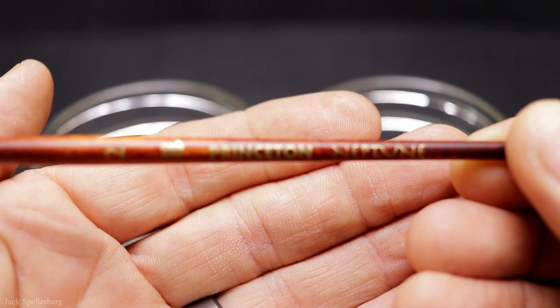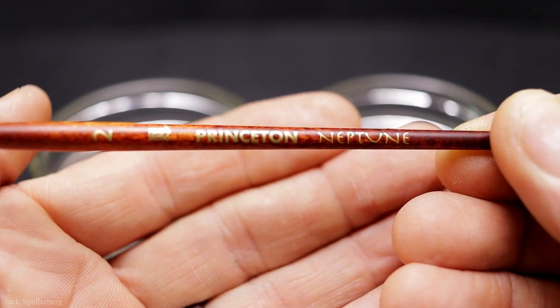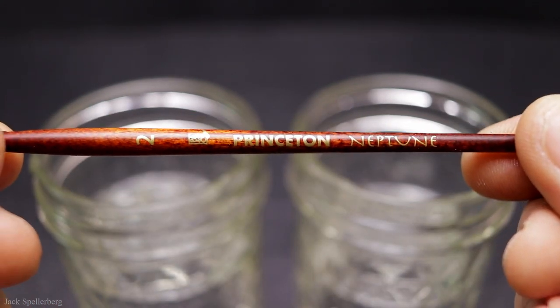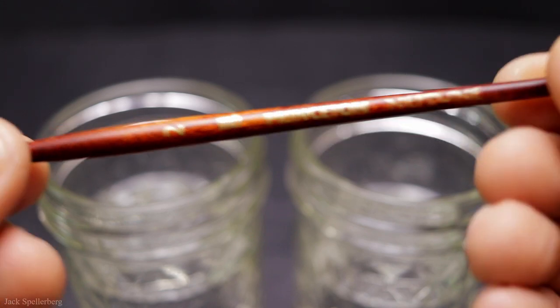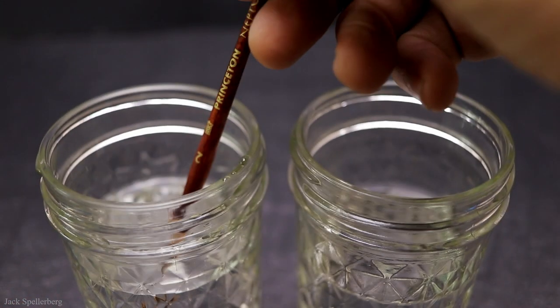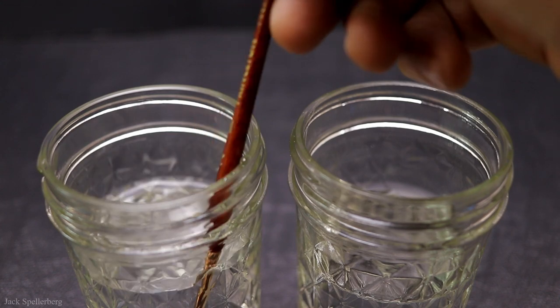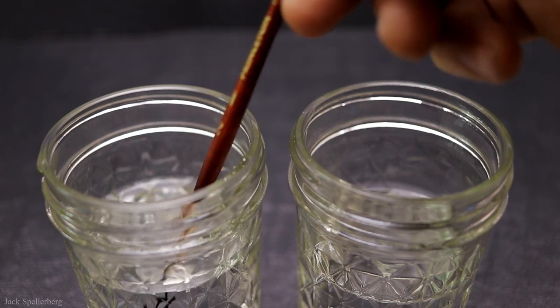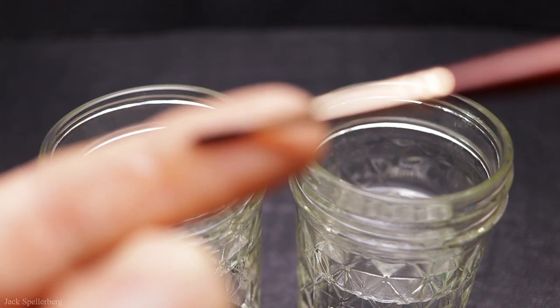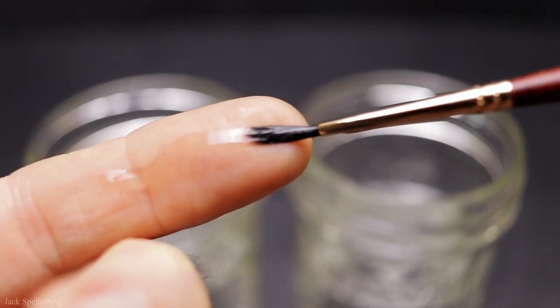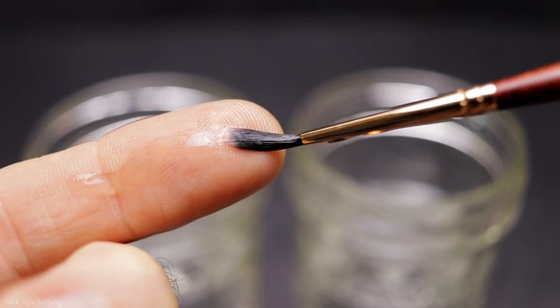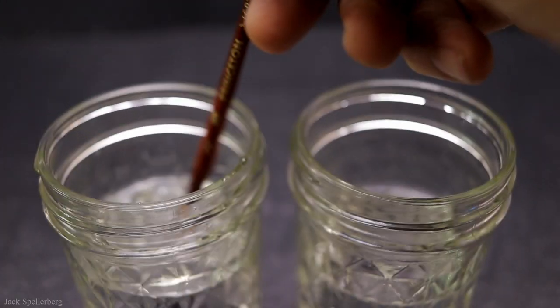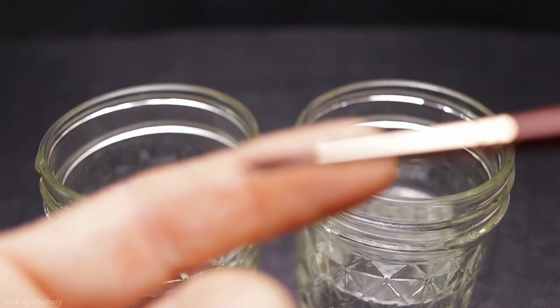So then I went to the next one, which is a Princeton Neptune number two. I sort of just gravitated toward this line of brush. There's so many to choose from. It was kind of overwhelming all the different ones that they had. So I just settled on the Princeton Neptune series. Part of it was I like the color of the handle. I mean, that's kind of a goofy way to choose a brush. But for now, they seem to be okay.